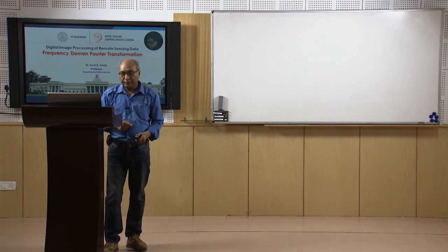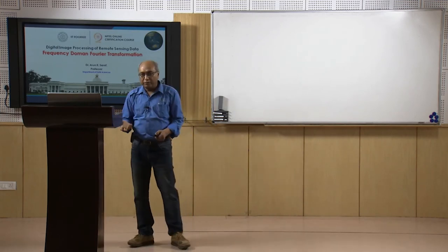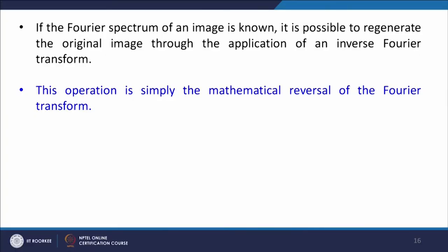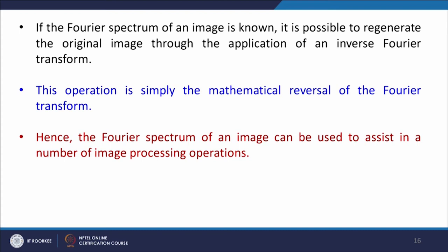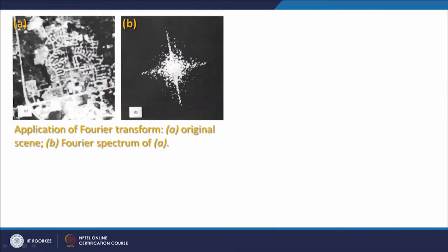If the Fourier spectrum of an image is known, it is possible to regenerate the original image through the application of an inverse Fourier transform. The Fourier transform spectrum of an image can be used to assist in a number of image processing operations. For example, spatial filtering can be accomplished by applying a filter directly on the Fourier spectrum and then performing an inverse transform. In this example shown here, the image and its Fourier spectrum are displayed — components or features which are horizontal in the image appear here, and features in vertical directions appear separately.